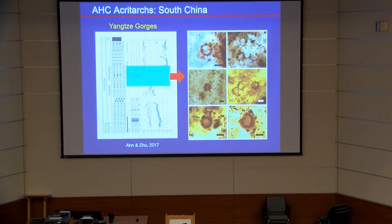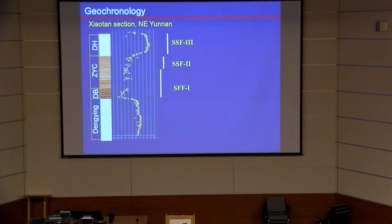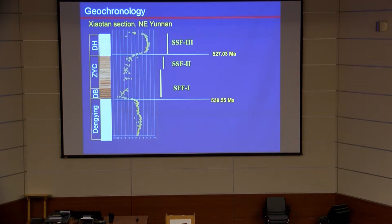We also want to understand acritarchs and how to tie them to other stratigraphic tools like isotopes, small shellies, and geochronology. In the Yangtze Guji area of South China we found a nice acritarch assemblage right within or just above the base excursion, associated with small shelly fossils. We also recently found similar acritarchs below the small shelly fossils and below the phosphate — not yet published. From the Shell Time section as a reference, we have successful small shelly fossil assemblages in zones 1, 2, and 3, and colleagues have obtained precise U-Pb ages from these sections.